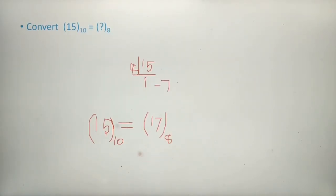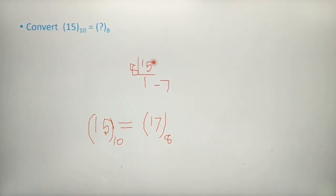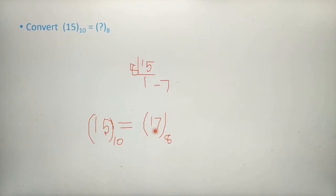Next example: convert 15 (base 10) to its octal number. When you divide 15 by 8, we get quotient 1 and remainder 7. Since the quotient 1 is less than 8, we stop. So 17 is the octal number for decimal 15.